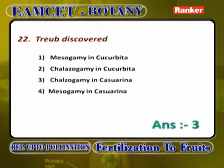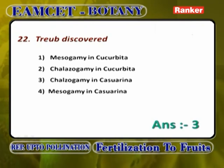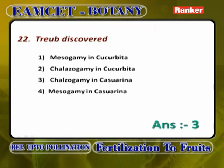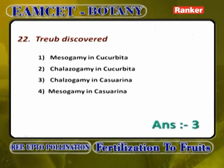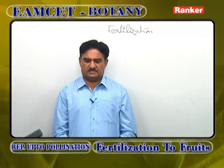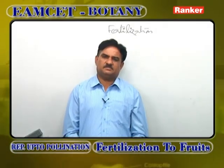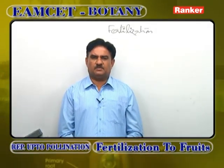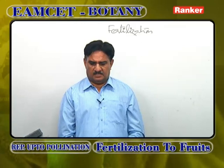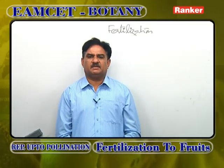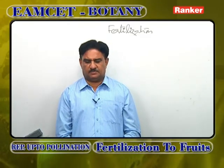Troip discovered chalazogamy in Casuarina — chalazogamy means movement of pollen tube along with 2 male gametes into the ovule through the chalaza. This chalazogamy in Casuarina was first proposed by Troip. Answer: chalazogamy in Casuarina.